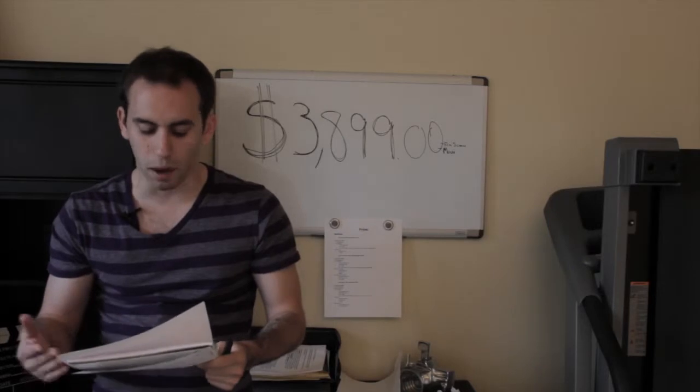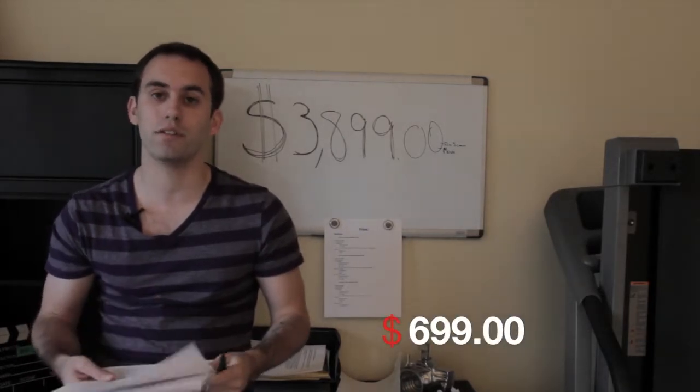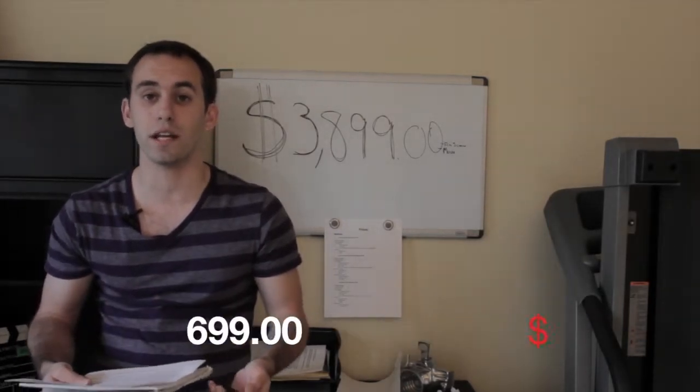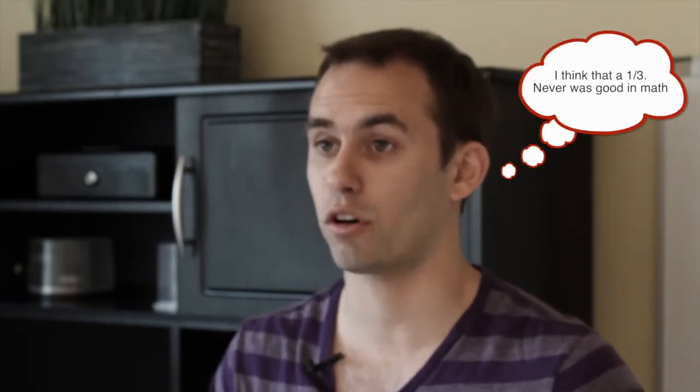But remember, bodies can always be upgraded, but good quality glass is what makes the image really. So the 60D body only is about $699, about one third of the price of buying the Canon 5D Mark III with that lens.